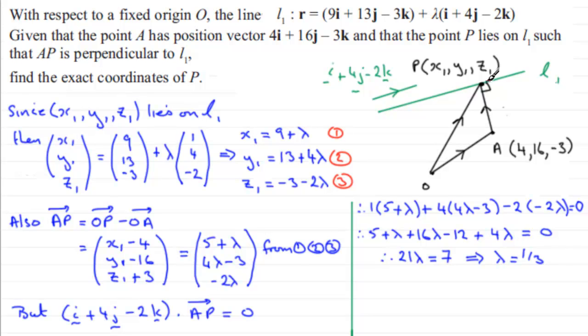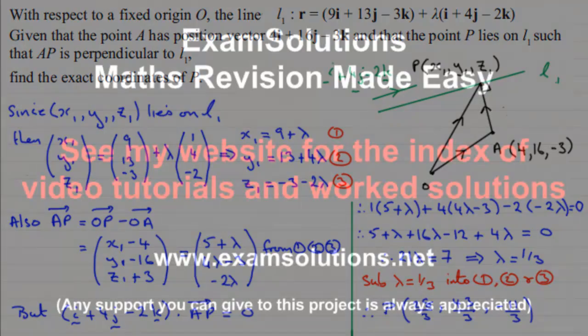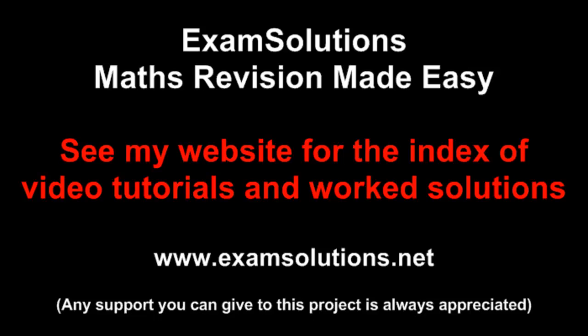Now, all I've got to do now to get the coordinates of P, find x1, y1, z1, is I can substitute lambda equals a third into each of these equations, 1, 2, and 3. So if I sub lambda equals a third into 1, 2, and 3, then I'm going to get the coordinates of P. So if you put 1 third into here, 9 plus a third gives you 28 thirds. And similarly, if you put a third into 13 plus 4 lambda and into this one here, the other coordinates come out as 43 over 3, and then minus 11 over 3. And there's your coordinates then for P.